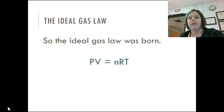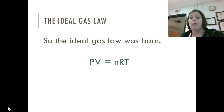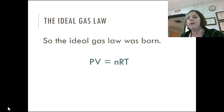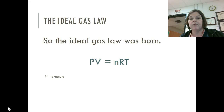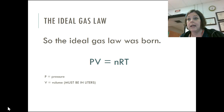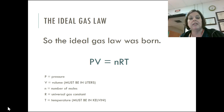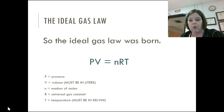PV equals NRT. The PV part comes from Boyle's Law. N is from Avogadro's Law. R is a constant — the universal gas constant — developed at STP. P is pressure. V is volume, and it must be in liters, not milliliters or centimeters cubed. Remember, centimeters cubed and milliliters are the same thing. N is the number of moles. T is temperature, and it must be in Kelvin. When talking about gases, temperature must always, always be converted to Kelvin.